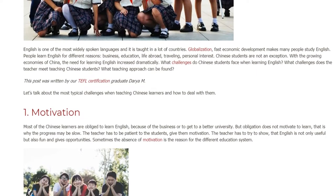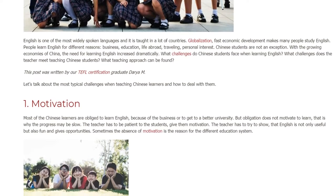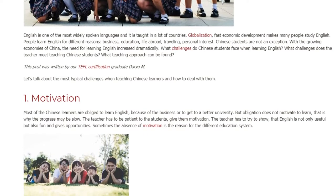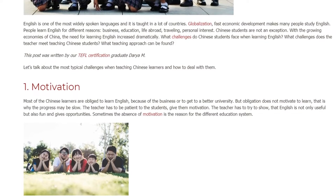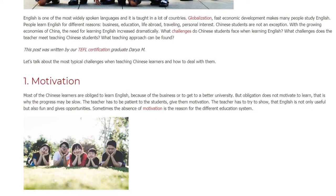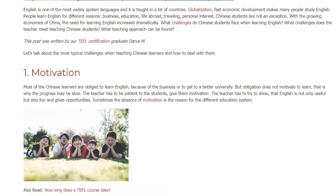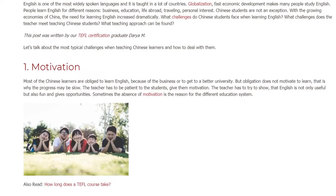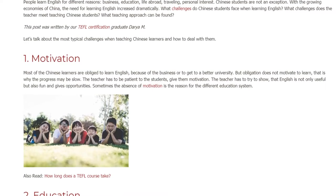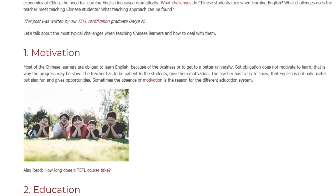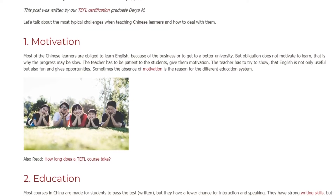Challenge 1: Motivation. Most Chinese learners are obliged to learn English because of business or to get into a better university. But obligation does not motivate learning, which is why progress may be slow. The teacher has to be patient, give students motivation, and show that English is not only useful but also fun and provides opportunities.